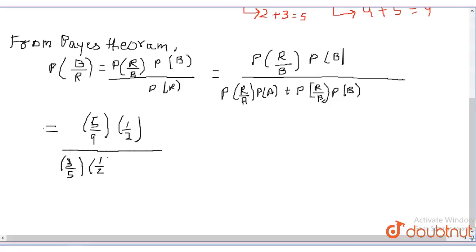5 upon 9, 1 upon 2 which is equals to 25 upon 32.